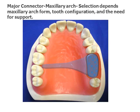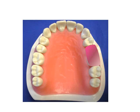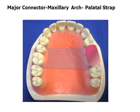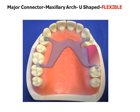The maxillary major connector selection depends on maxillary arch form, tooth configuration, and the need for support. Several variations of the palatal strap are illustrated. The U-shaped major connector is considered the least rigid of these connectors but is very frequently used. The connector should terminate anterior to the vibrating line. A bead line is used to ensure intimate contact with the soft tissue, maintain an atmospheric seal, and help reduce food impaction.